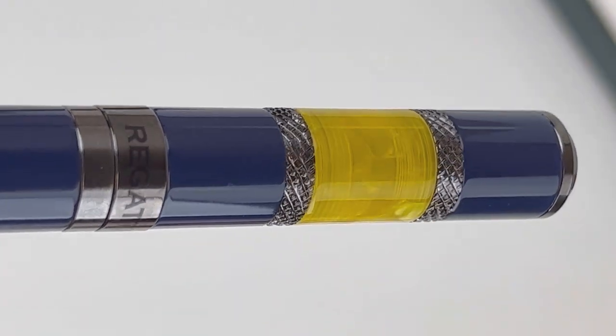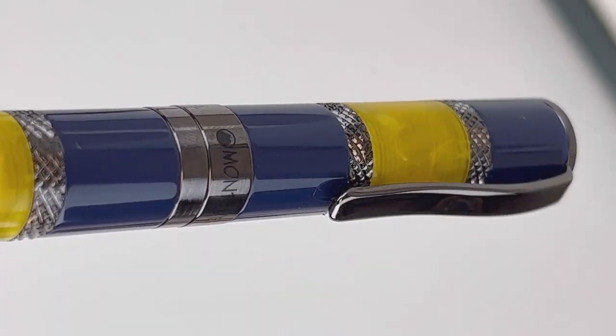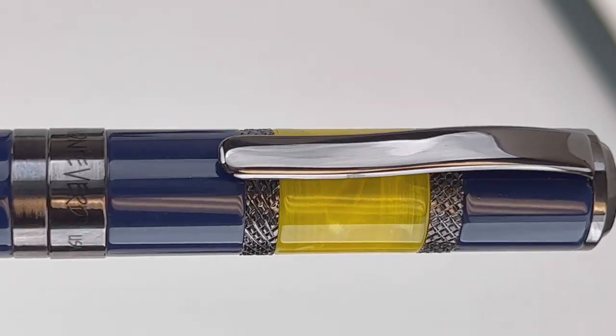Here's a good look at that resin. The yellow is really quite vivid, and it's a little bit translucent, so you can see a little bit of what's going on inside the pen.